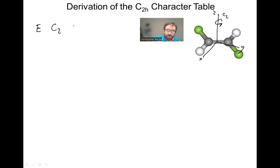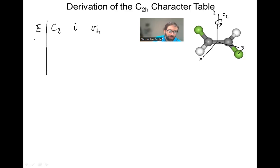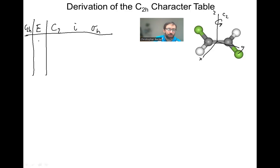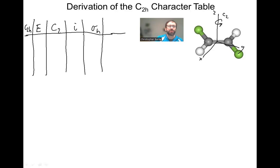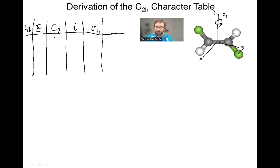So we have our identity, we have our C2, we have our i (inversion), and we have our sigma H. In the top left corner I'm going to put the point group for this character table, which is C2H. I'll leave room on the right for functions that we're going to test. Notice that I dropped the hat notation here, because these are no longer operations — we're talking about classes. Each class only has one operation in it.